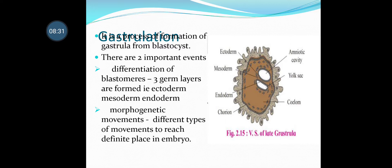Gastrulation is the process of formation of gastrula from the blastula or blastocyst. There are two stages in gastrulation: differentiation of blastomeres, and then morphogenetic movements. In differentiation of blastomeres, it results in the formation of three germinal layers — ectoderm, mesoderm, and endoderm. In the next stage, morphogenetic movements, cells move to reach their definite place in the embryo.